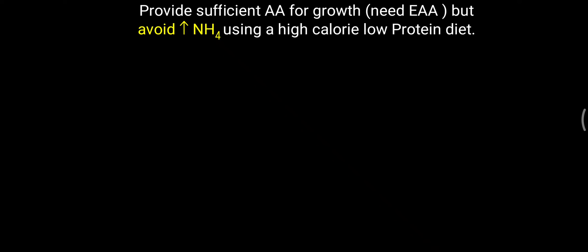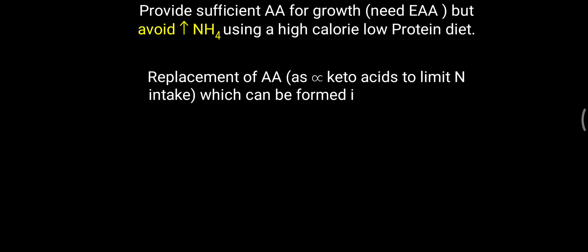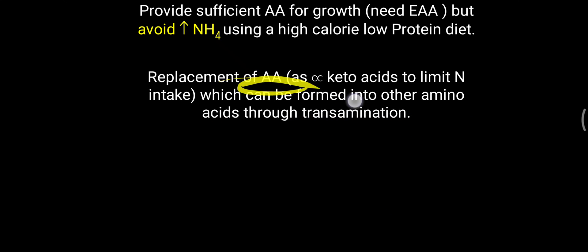Other important treatment aspects include providing sufficient amino acids for growth, particularly essential amino acids. To avoid increased ammonia formation, a high-calorie and low-protein diet is recommended, since protein is the main source of nitrogen. Alpha-keto acids can replace amino acids to limit nitrogen intake. The overall target is to decrease nitrogen load, since ammonia cannot be removed via the urea cycle in these disorders. Providing only sufficient essential amino acids is the goal.